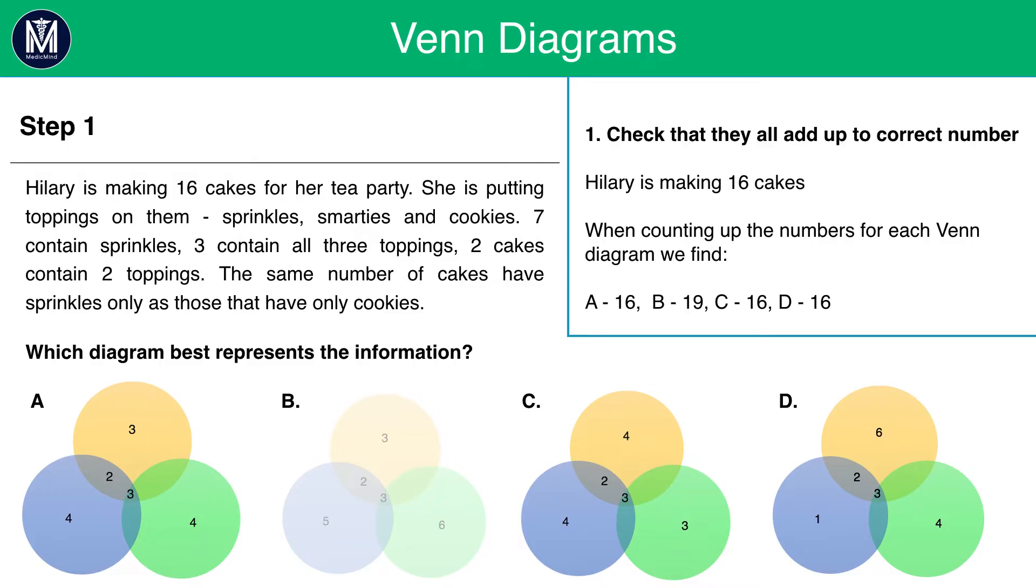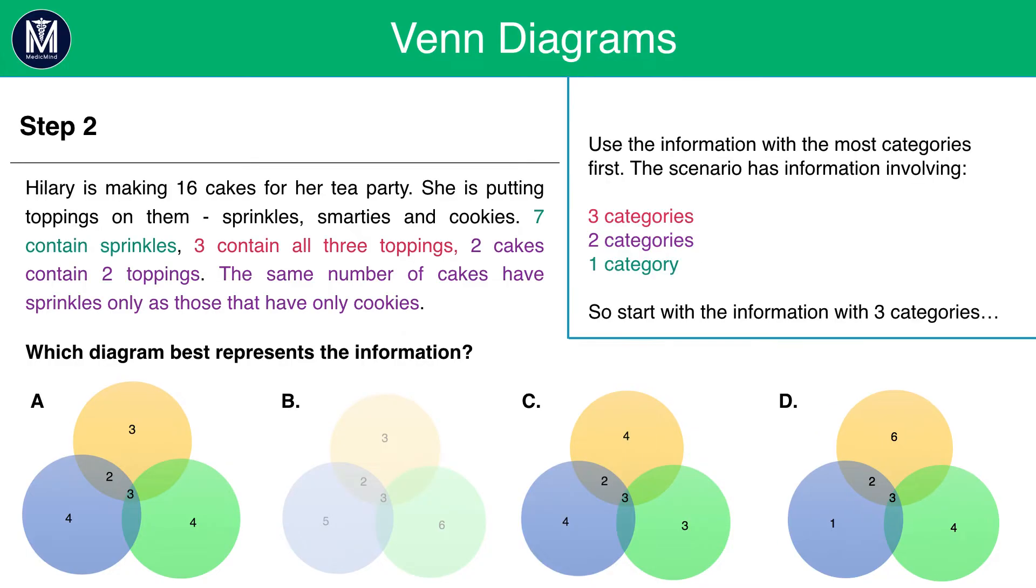Now, the next thing to look at is the information with the most categories. There are 3 circles here, so anything that tells us about all 3 circles is the most valuable information you are going to get. Let's split up the information into the 3 categories, 2 categories and 1 category. In red, we have the 3 category information. In purple, we have the 2 category information. And in green, we have the 1 category information.